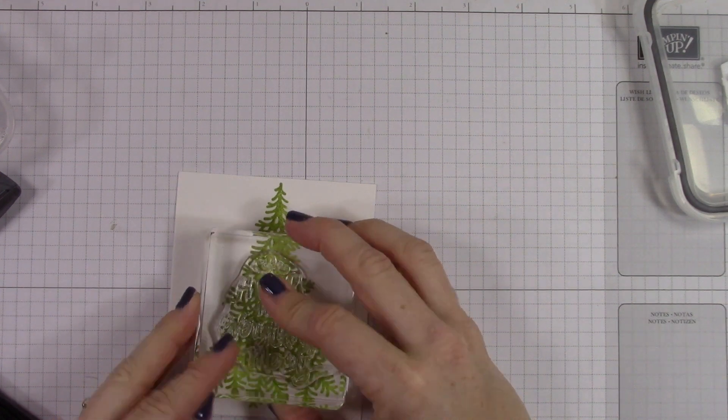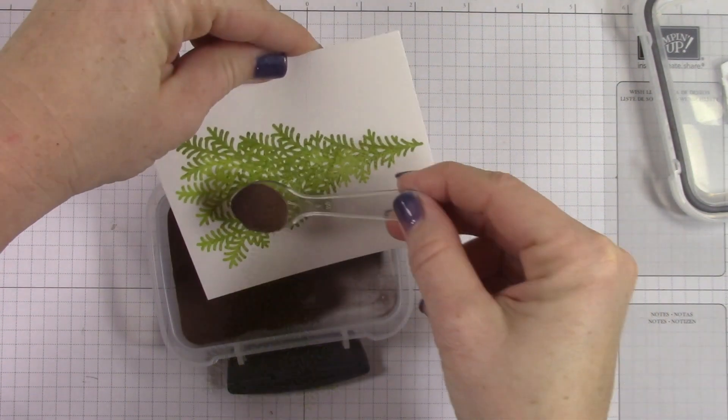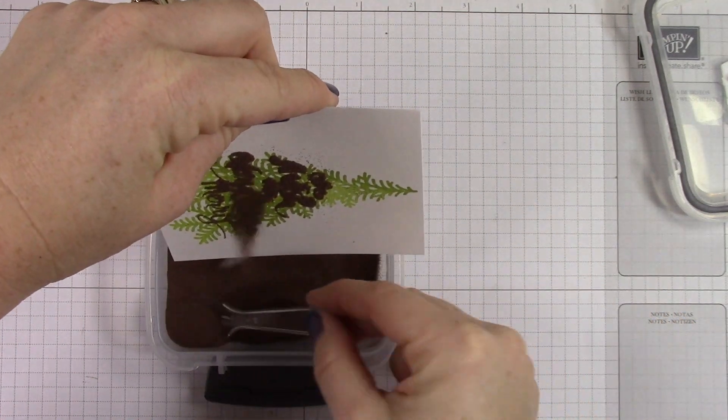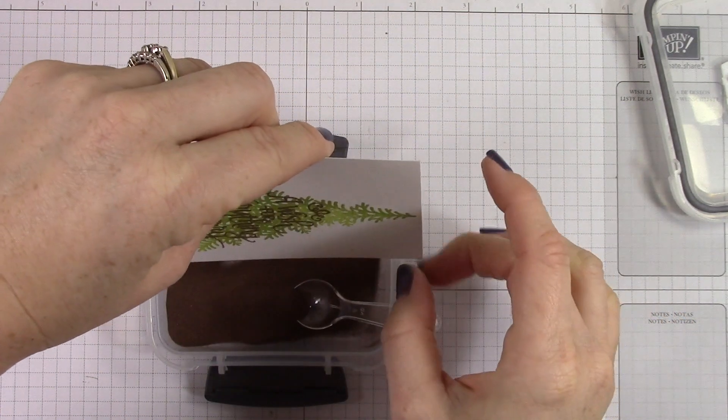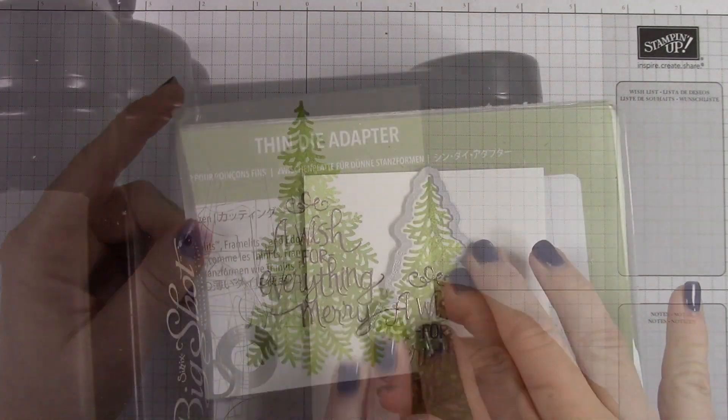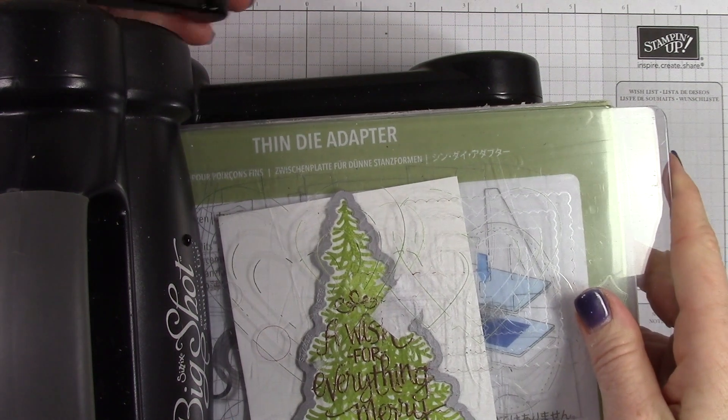And there was our fly again - did you just see George? And then my sentiment here, which is 'a wish for everything merry,' and we're gonna use copper embossing powder over that. I really feel like I need to explain to you - okay, then I heat set it. Now we're gonna cut it out. Let me explain this.